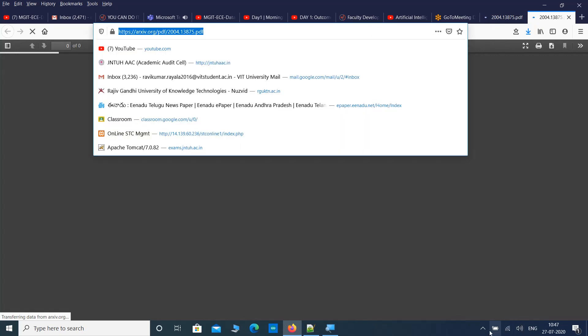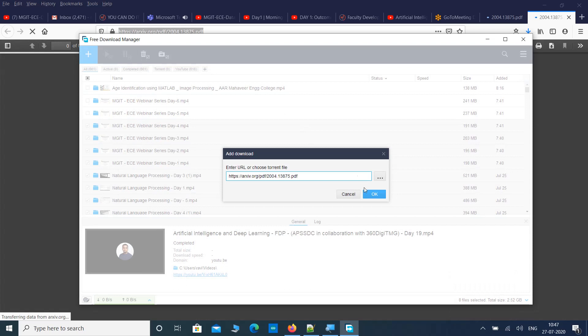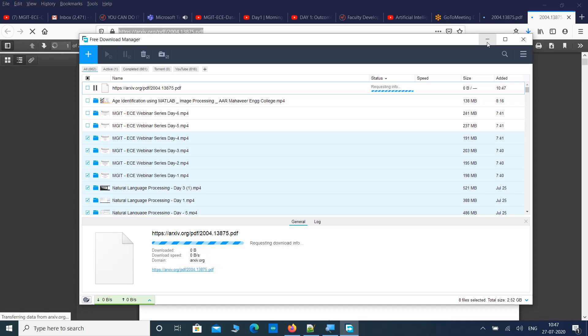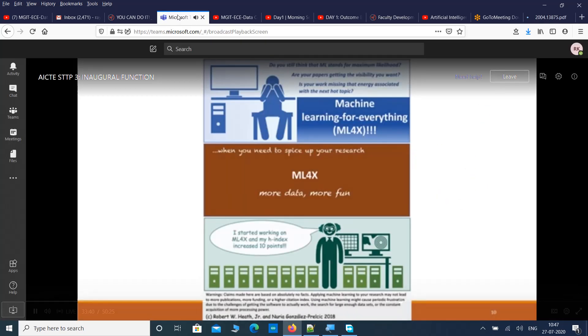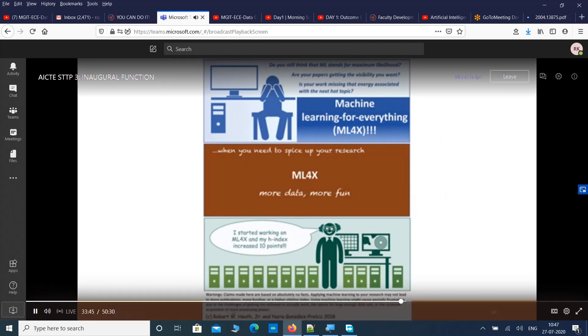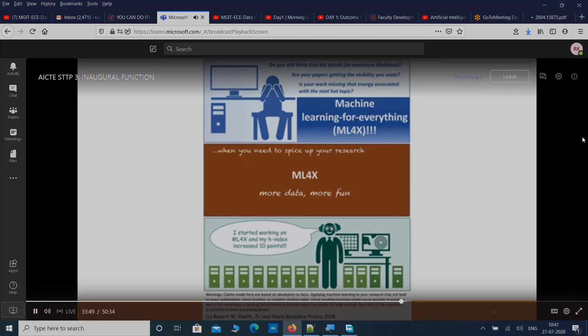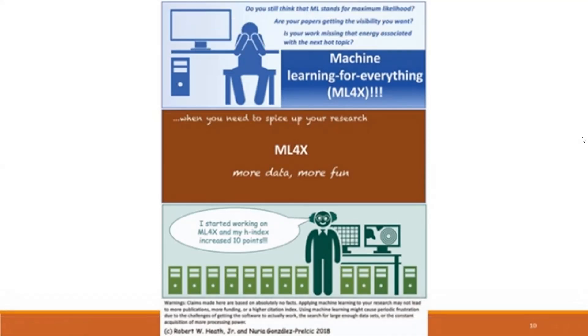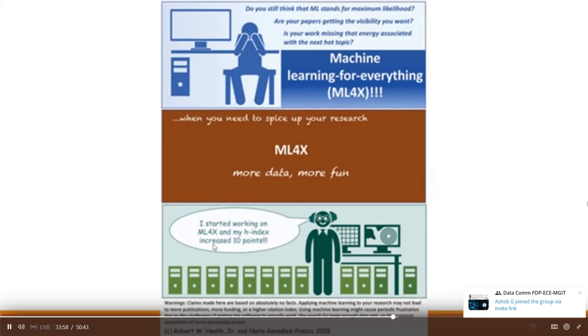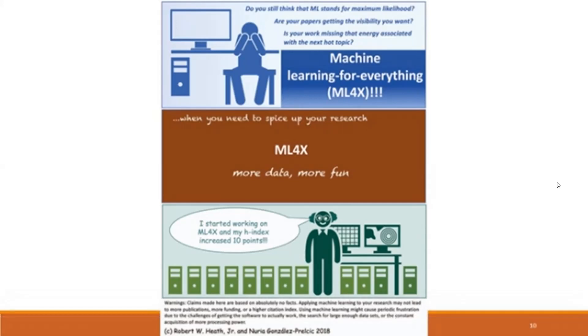Here's a funny meme: for people familiar with wireless communications, whenever you see 'ML' do you still think it stands for 'maximum likelihood'? You should now start thinking of ML as machine learning. Robert Heath — a professor from University of Texas at Austin who recently started working on this — says that since he started calling his work 'machine learning for X', his h-index went up 10 points, suggesting all his papers started getting more citations.